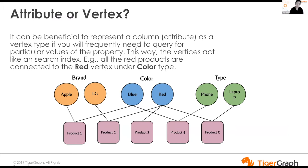Alternatively, we can create indexes on those attributes so you don't need a vertex in the middle. However, indexes are different from vertices fundamentally — indexes most of the time are on disk, with a cache layer, and lookups follow a B-tree structure with multiple layers. Performance-wise, creating vertices will be better; however, storage-wise, an index is more memory-efficient.